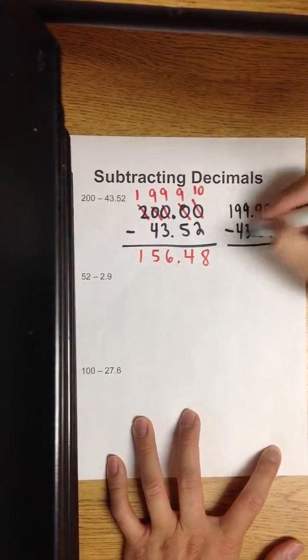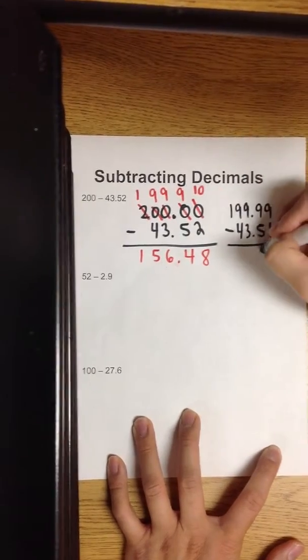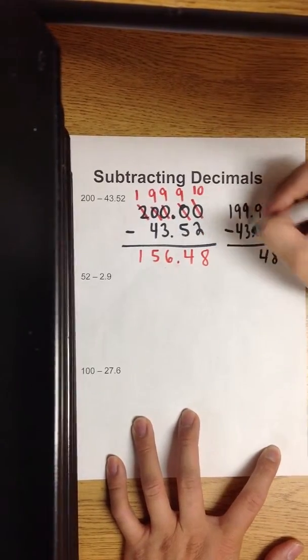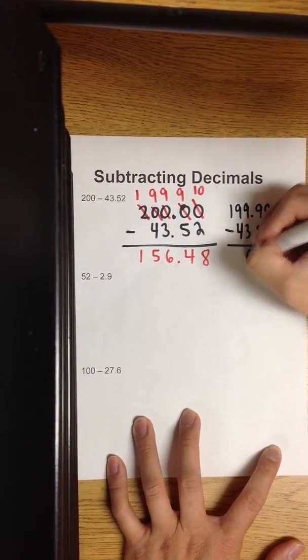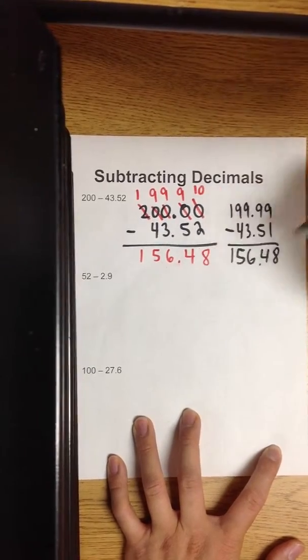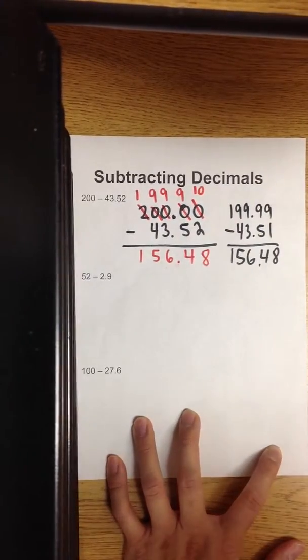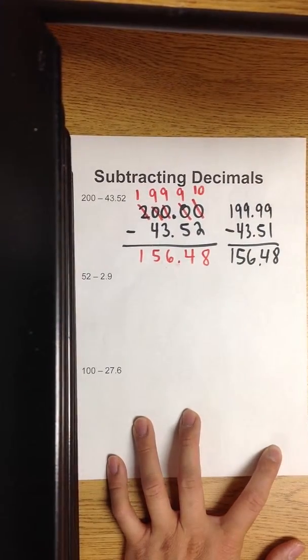Nine minus one is eight. Nine minus five is four. Nine minus three is six. Nine minus four is five. One. Equivalent answers.